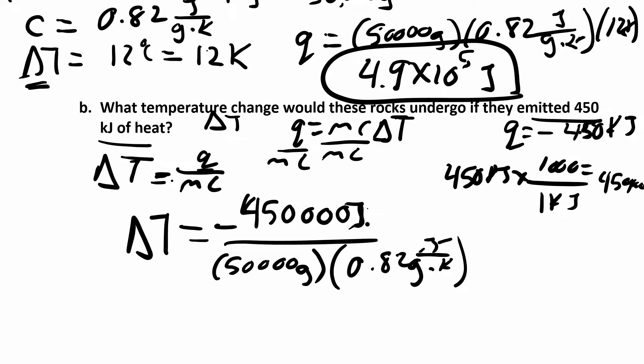My joules cancel, my grams cancel, and I end up with something in Kelvin. I got like a negative 11 Kelvin. So that just means the temperature is decreasing, which is what you would expect as they're emitting heat. The energy, the heat should go down, the temperature should go down. Make sure you do a couple more of those for homework.